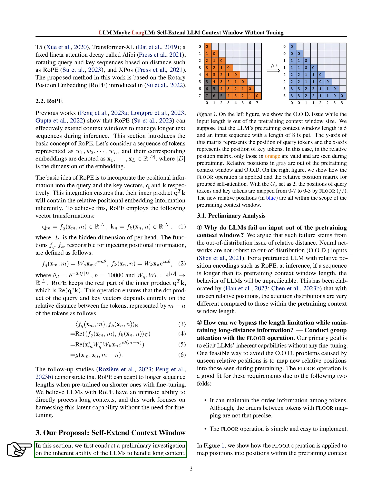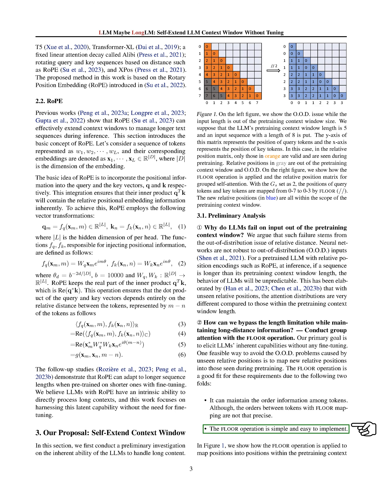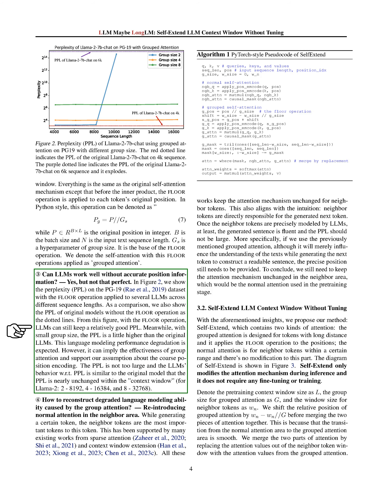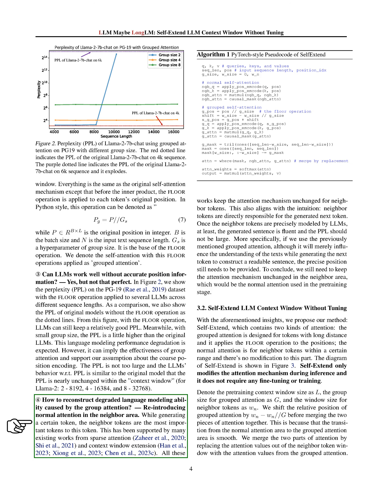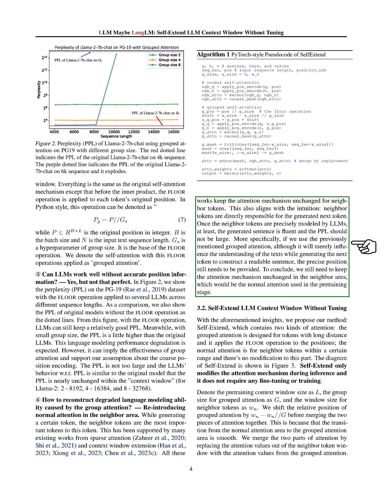We conducted a preliminary investigation on the ability of language models to handle long content. We found that language models fail on input out of the pre-training context window due to the out-of-distribution issue of relative distance. To bypass the length limitation while maintaining long-distance information, we proposed conducting group attention with the floor operation. This operation can maintain the order information among tokens and is simple and easy to implement. We found that language models can work well without accurate position information, but not perfectly, and that language modeling performance degrades slightly with the floor operation. To reconstruct the degraded language modeling ability caused by group attention, we propose re-introducing normal attention in the neighbor area, since neighbor tokens are the most important tokens to a given token. Therefore, we need to keep the attention mechanism unchanged in the neighbor area, which would be the normal attention used in the pre-training stage.